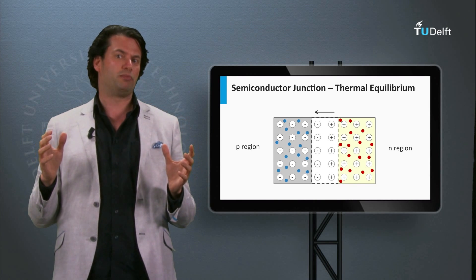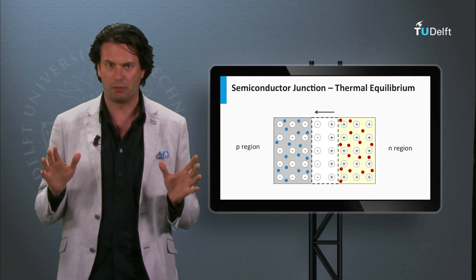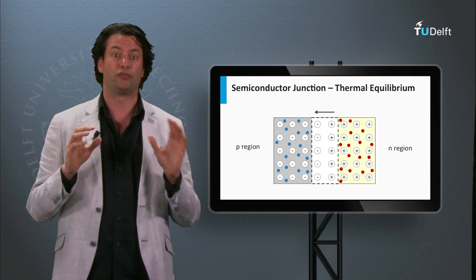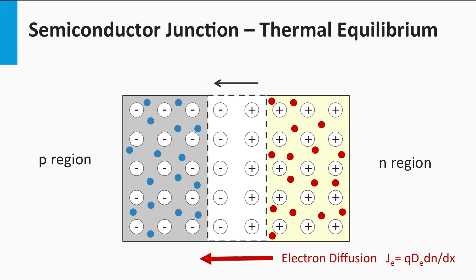So, we are considering a p-n junction that is in the dark and in thermal equilibrium. The two transport mechanisms over the space charge region are in balance. We have introduced two simple equations for drift and diffusion. The diffusion current density for electrons is ruled by the density gradient, which is the electron density in the n-region minus the electron density in the p-region. The electrons are the minority charge carriers in the p-region, which means the density gradient is fully determined by the majority electron density in the n-region. The same is true for holes — the diffusion current density for holes is ruled by the density gradient between the p-region and n-region, fully determined by the majority hole density in the p-region.